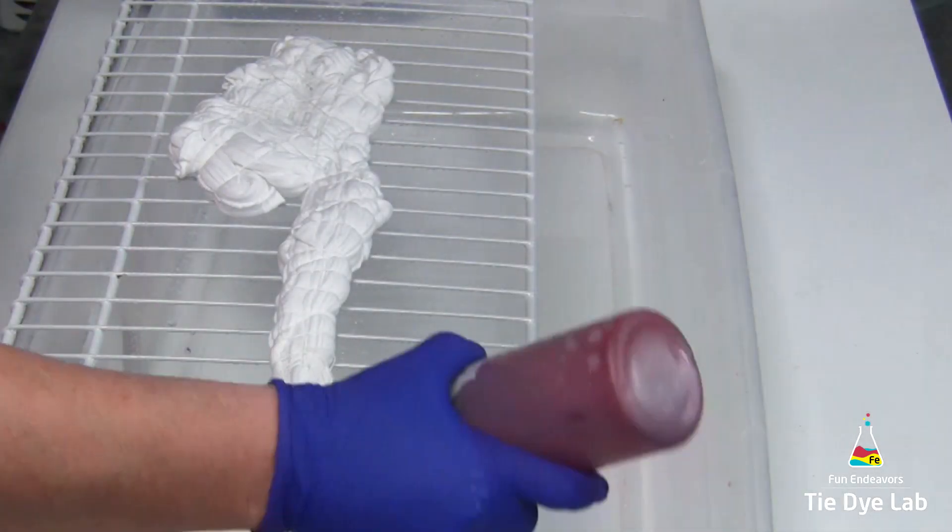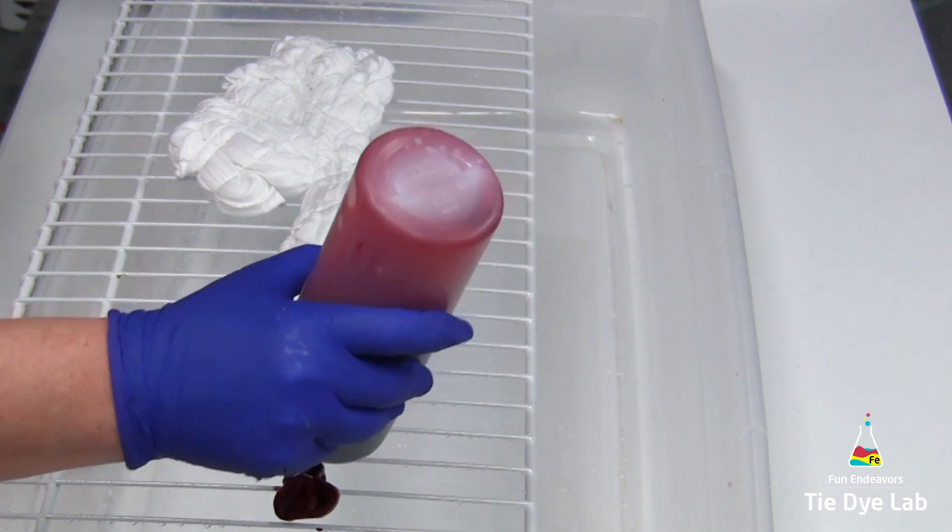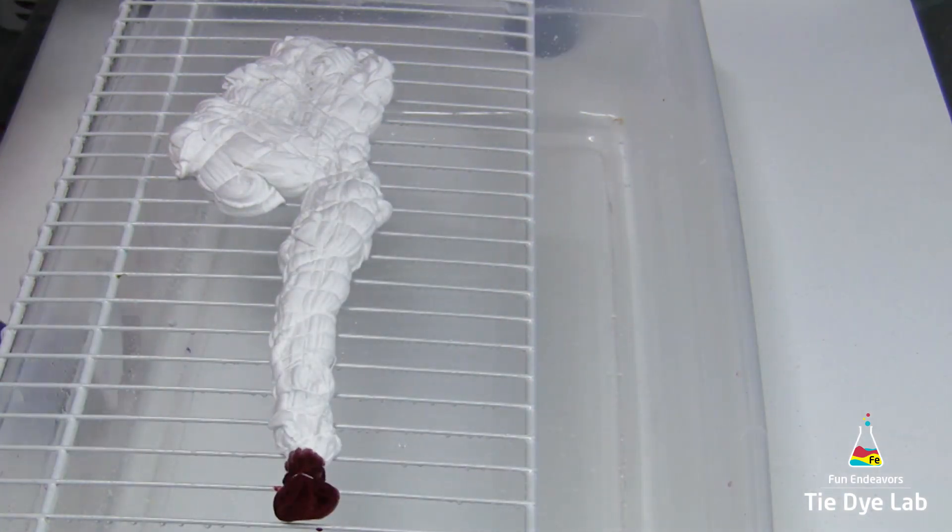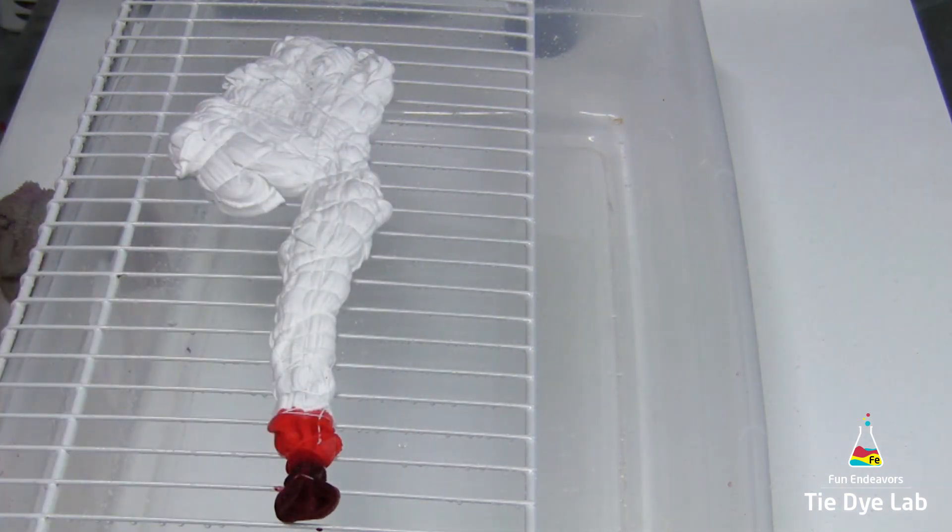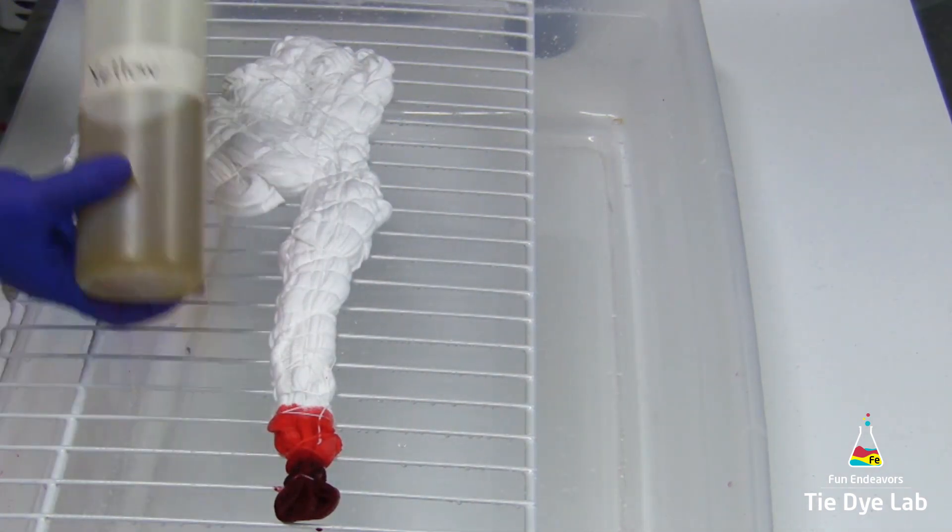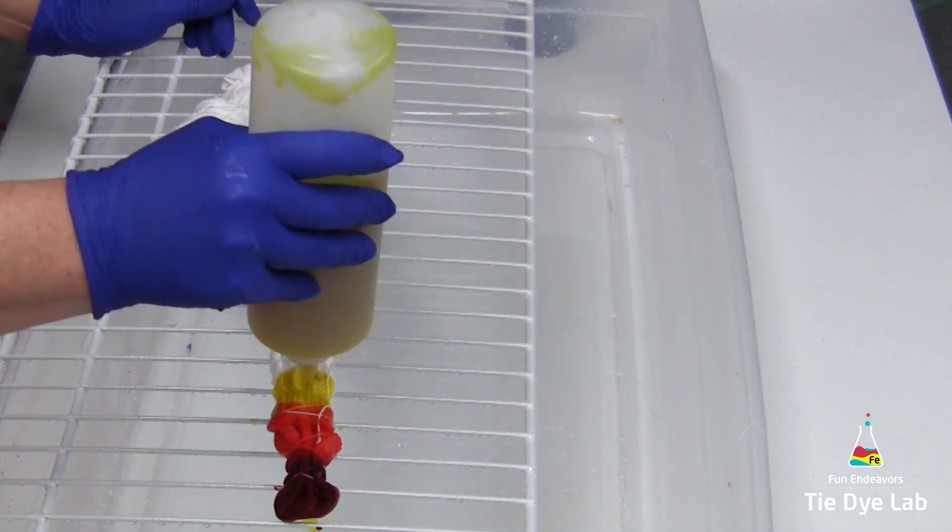Okay, so now it's time to start applying the dye. For this one, I'm going to use a rainbow pattern. So I've mixed up Dharma's Fire Red, Deep Orange, Lemon Yellow, Bright Green, Turquoise, Grape, and Fuchsia.